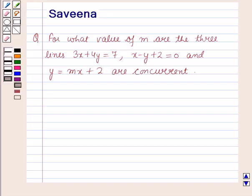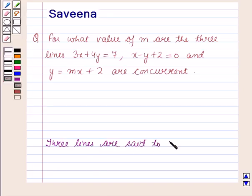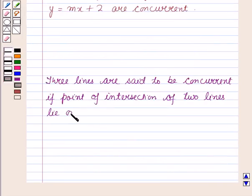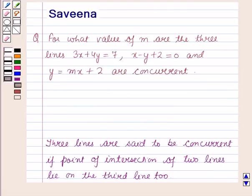Before starting the solution of this question we should know a result. Three lines are said to be concurrent if the point of intersection of two lines lies on the third line too. Or we can say the three lines are concurrent if they meet in a point, that is, they have a common point of intersection.